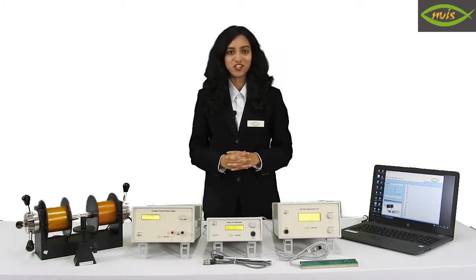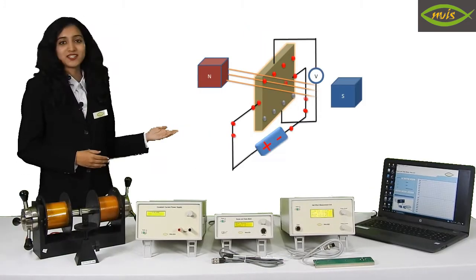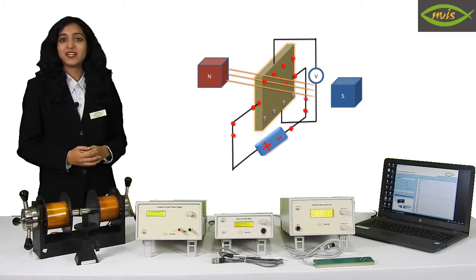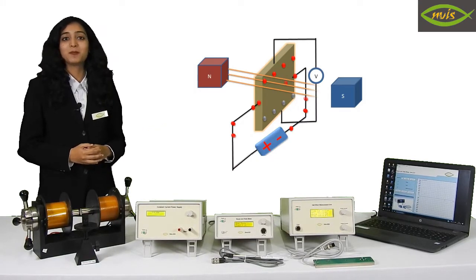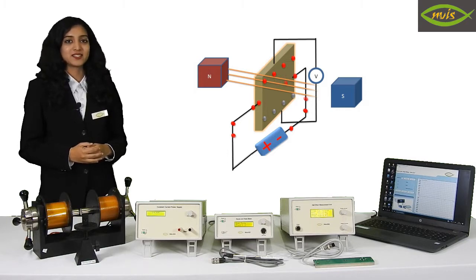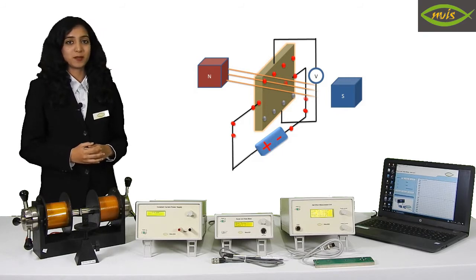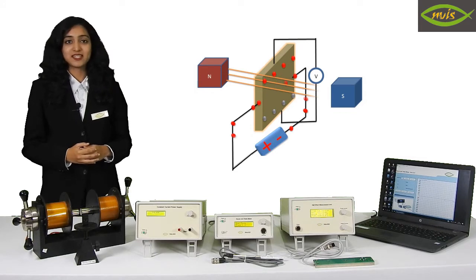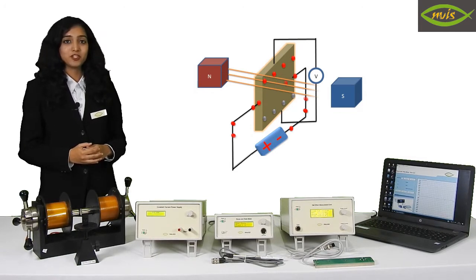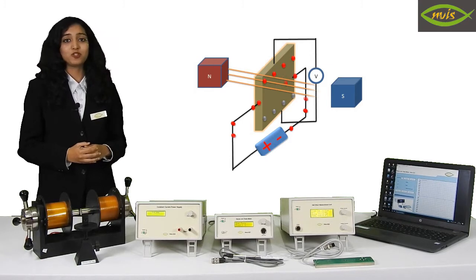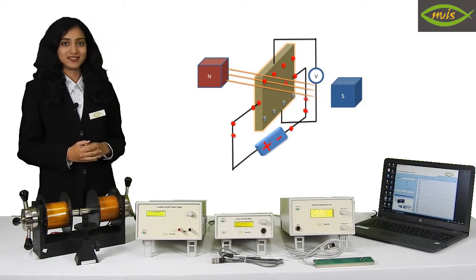First of all, let me tell you the main concept behind Hall Effect, which is a very important observation in material science. As you can see in the figure, when an electric current flows through a conductor in a perpendicular magnetic field, it exerts a transverse force on the moving charge carriers which tends to push them to one side of the conductor. This motion of charge carriers balances the magnetic influence, which produces a measurable amount of voltage between the two ends of the conductor. This is known as the Hall Voltage.